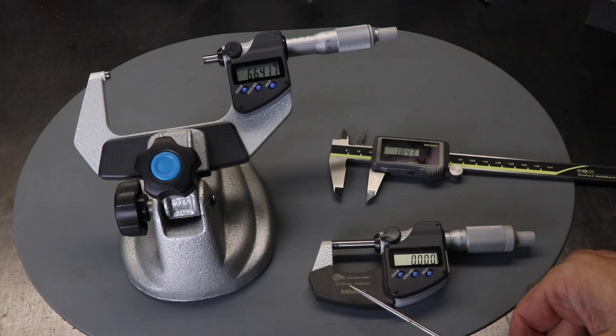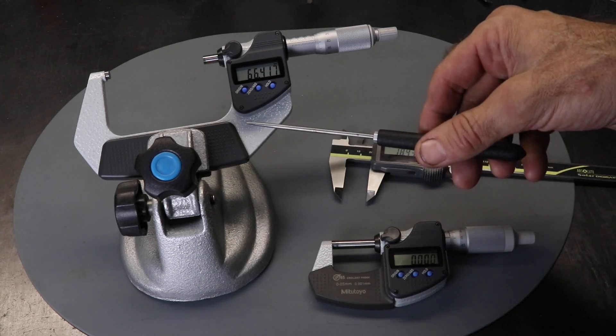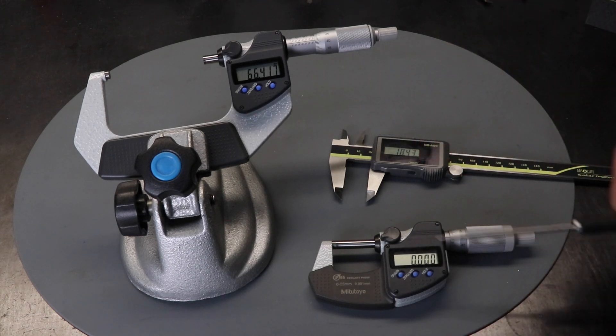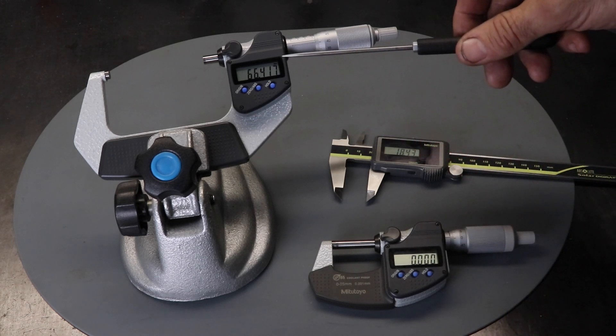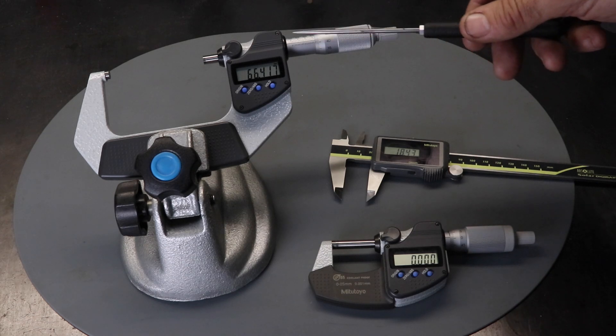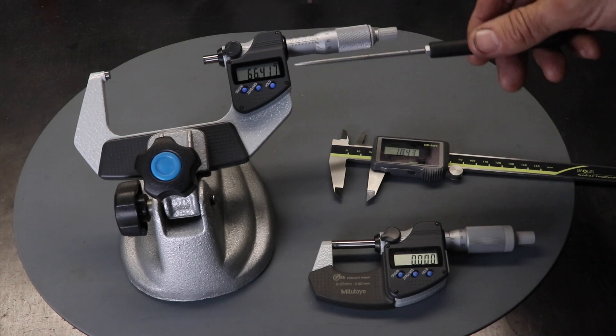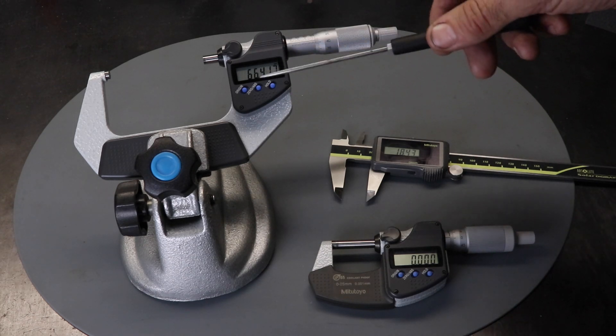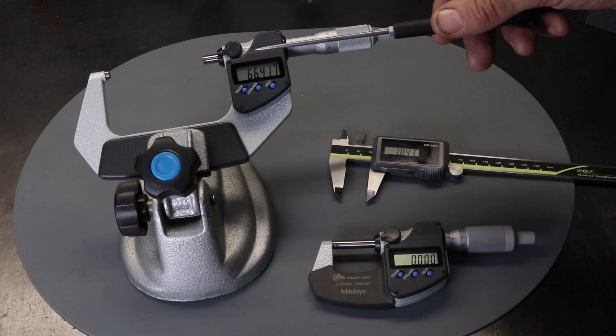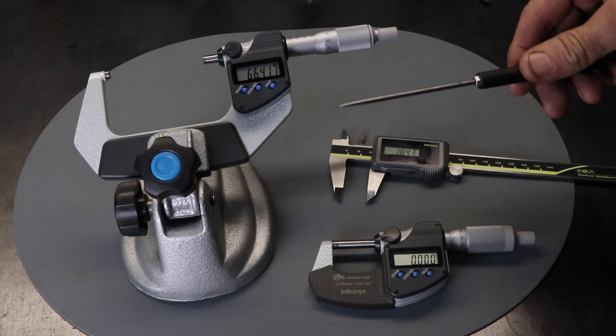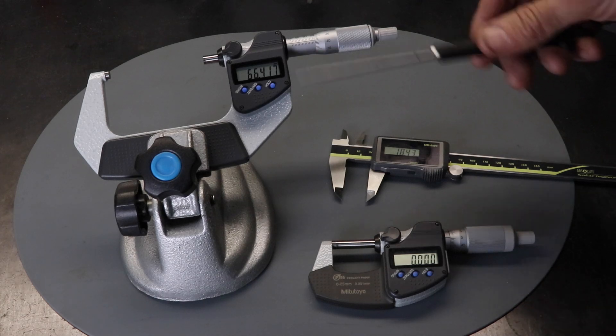The smaller one reads from 0 to 25 millimeters, and the larger one from 50 to 75. Other than that, the features are very similar. You can get vernier versions as well, and they're cheaper, but it takes a little more time to read the display. The level of accuracy you can achieve can be similar with either type.